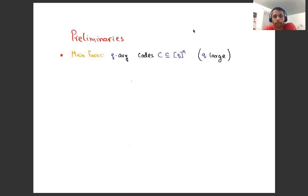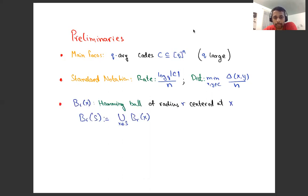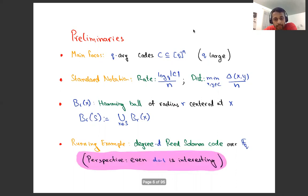The main focus of this talk are going to be Curie codes of length n — codes over alphabets of size Q, and I'm thinking of Q as large, size comparable to n. Standard coding notation: the rate of C is the log of size of C base Q divided by n, and the distance of C is the minimum relative Hamming distance between any two points in the code. B(R,x) is a Hamming ball of radius R centered at x; B(R,S) for a set S is a Hamming ball of radius R around the set S. A running example is a degree D Reed-Solomon code over F_Q — even degree one Reed-Solomon codes over F_Q are interesting for what I'm about to talk about.